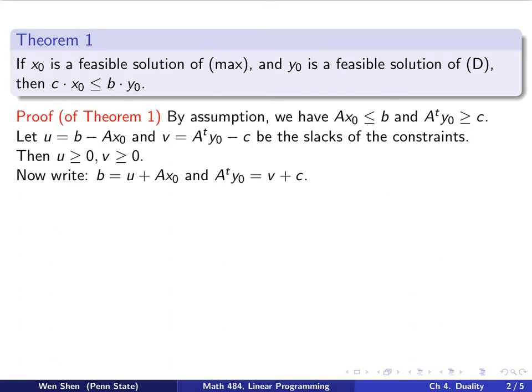Here's a little trick. I can rewrite this equation. I can write it as b equals u plus Ax0. And the same thing here, I move the negative c to the other side, and I have A transpose y0 is v plus c.